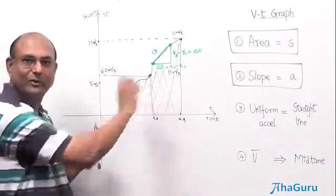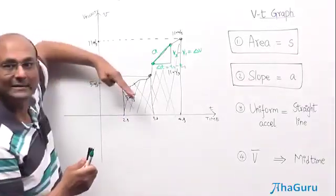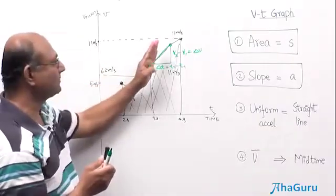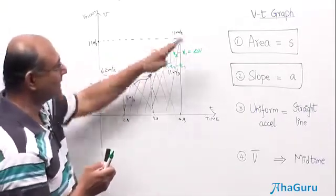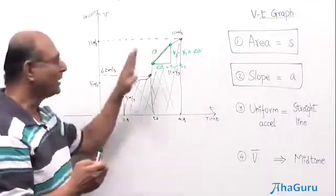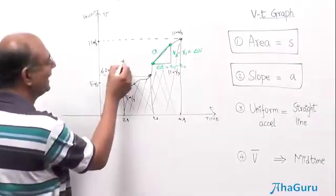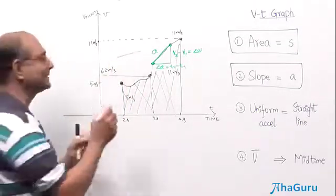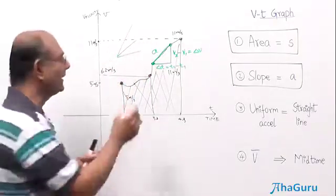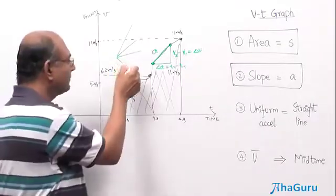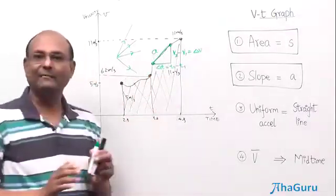Here you can see the acceleration is negative in one region, and as you go further, the acceleration becomes more — it is very steep here and a little lesser there. Acceleration represents how steep the graph is. If the graph looks gently sloped, acceleration is less; steeper means more acceleration; steeper still means even more acceleration; and if it slopes downward, the acceleration is negative.